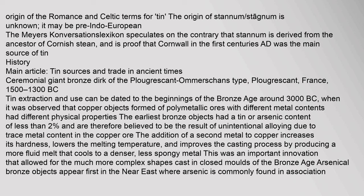Tin extraction and use can be dated to the beginnings of the Bronze Age around 3000 BC, when it was observed that copper objects formed of polymetallic ores with different metal contents had different physical properties. The earliest bronze objects had a tin or arsenic content of less than 2% and are believed to be the result of unintentional alloying. The addition of a second metal to copper increases its hardness, lowers the melting temperature, and improves the casting process by producing a more fluid melt that cools to a denser, less spongy metal.